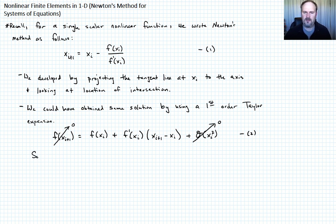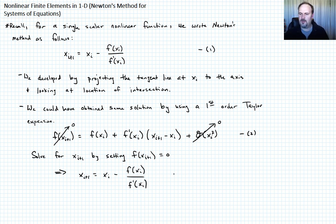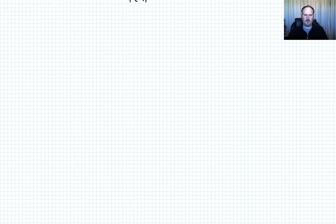We can just solve equation 2 by setting F of X sub i plus 1 equal to 0 and solve for X of i plus 1. If we do that, this is a very easy algebraic exercise, so I'm not going to go through it all but hopefully you can see we get the same solution: X of i plus 1 is equal to X of i minus F of X of i over F prime of X of i. So that's the same as equation 1.